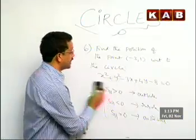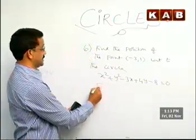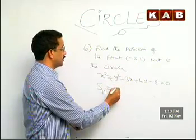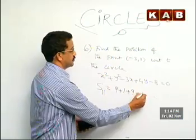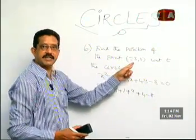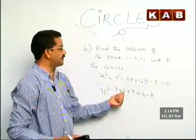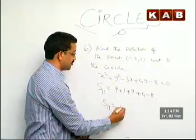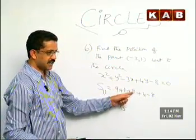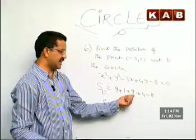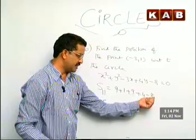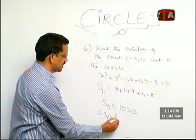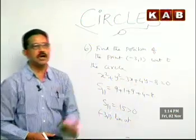My S1,1 here: I am putting the point minus 3 in place of x and 1 in place of y. Calculating: 9 plus 1 plus 9 plus 4 minus 8. That gives 10, plus 9 is 19, plus 4 is 23, minus 8 is 15. This is a positive number, greater than 0. So the point minus 3, 1 lies outside of the circle.